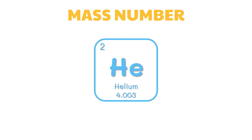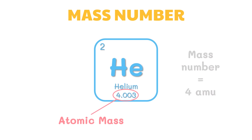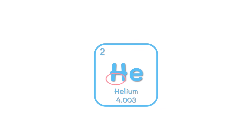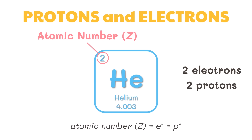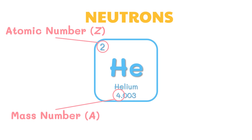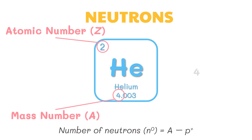To get the mass number, round off the atomic mass to the nearest whole number. For helium, the mass number is 4 atomic mass units. Using the formula, atomic number equals number of electrons equals number of protons, helium has 2 electrons and 2 protons. To get the number of neutrons, subtract the number of protons from the mass number: 4 minus 2 equals 2. Therefore, helium has 2 neutrons.